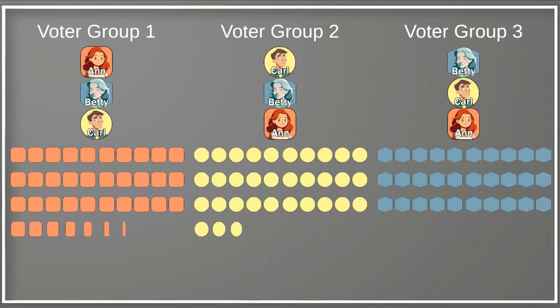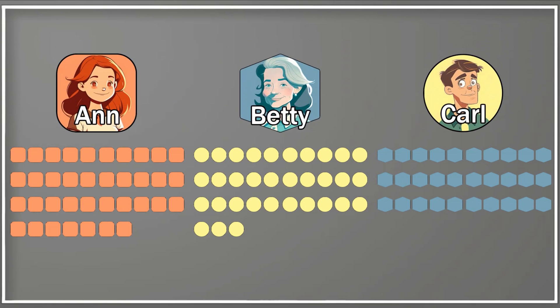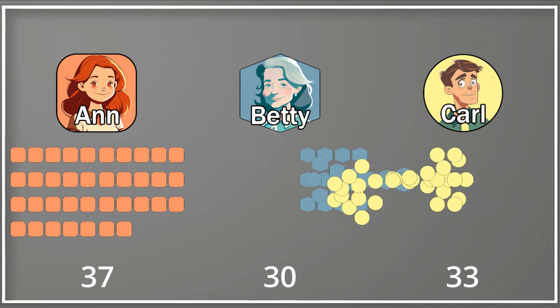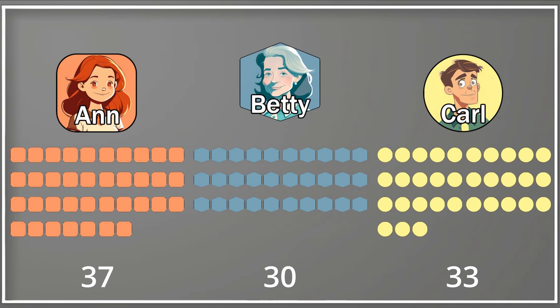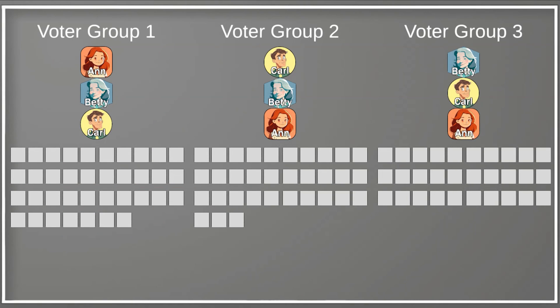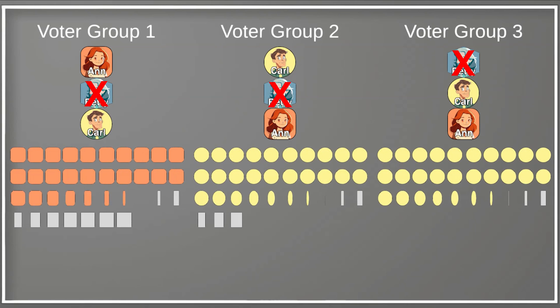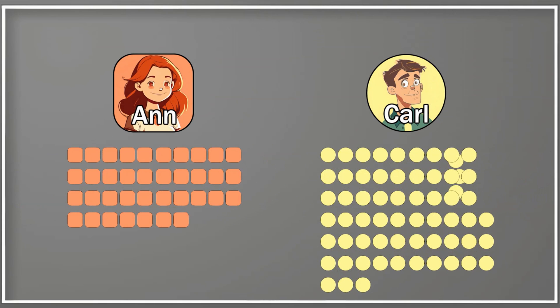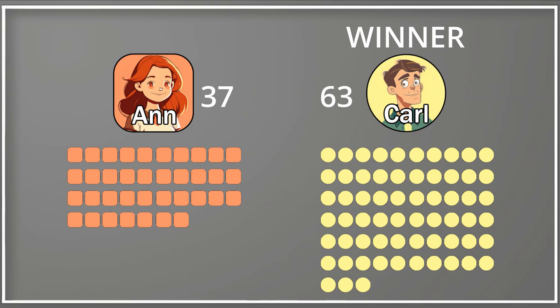Let's simulate an instant runoff. In the first round, everybody votes for their favorite candidate, just like the plurality vote. Then we eliminate the person with the least number of votes — in this case, Betty, with only 30 votes. We set up a second round of voting, but this time Betty is removed from the candidate pool. Voters choose between Anne and Carl. After everybody votes, we tally up the results of round two, and Carl wins with 63 votes. Carl is the winner of the instant runoff vote, even though it was run on the exact same population as our plurality vote.